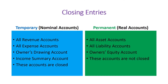After making all of these adjustments, closing entries must be made in the general journal. Closing entries, or closing journal entries, are entries made at the end of an accounting period to zero out all temporary accounts and transfer their balances to permanent accounts.